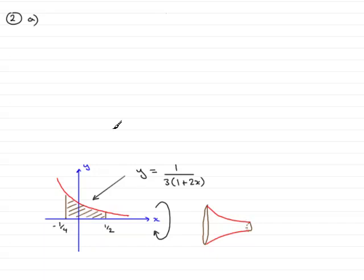So we've got to find the volume of revolution, and you should know that the volume of revolution V is given by π times the integral of y squared with respect to x going between two limits. In this particular example, the limits are minus a quarter to a half.